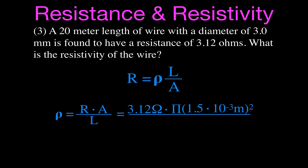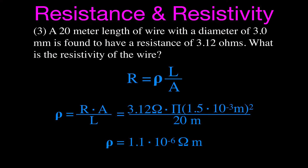The resistance is 3.12 ohms. The area is pi r squared, where the radius in meters is 1.5×10⁻³ meters — half of the 3mm diameter — don't forget to square it. Divide by the length of 20 meters and you get a resistivity of 1.1 times 10 to the minus 6 ohm·meters. Ohms times meters squared divided by meters leaves one meter, giving ohm·meters as expected.